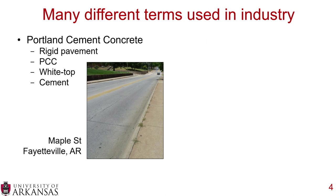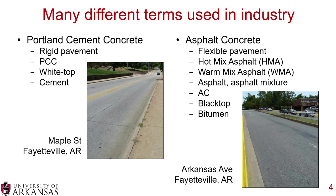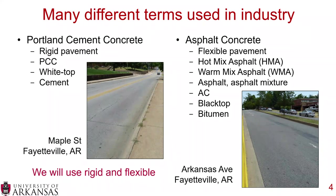There are many different terms used in industry. For Portland cement concrete, you may hear rigid pavement, PCC, white top, or cement — though cement is actually just a component of Portland cement concrete. For asphalt concrete, terms include flexible pavement, hot mix asphalt, warm mix asphalt, HMA, WMA, AC, black top, or in Europe, bitumen. For this presentation, we'll use rigid pavement and flexible pavement.